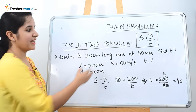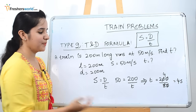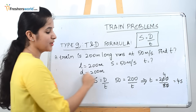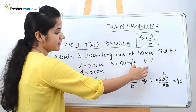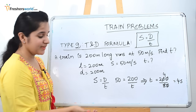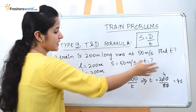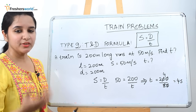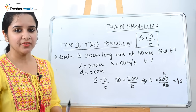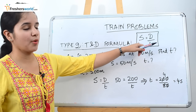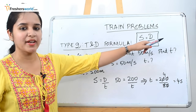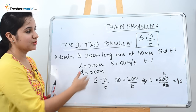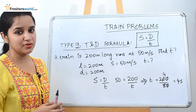Now you can understand the formula much better. In this question they gave the distance and asked for time. In certain questions they will give you distance and time and ask you to find speed. They will always give you two variables out of the formula and ask you to find the third. With this simple example you should understand how to use the formula.